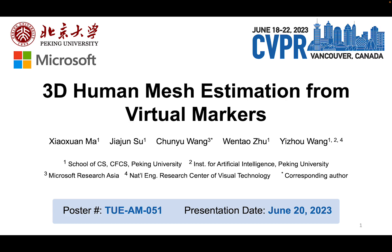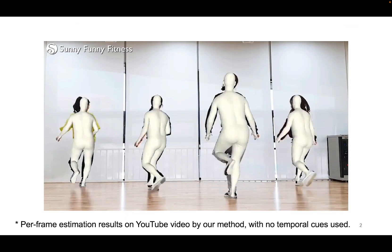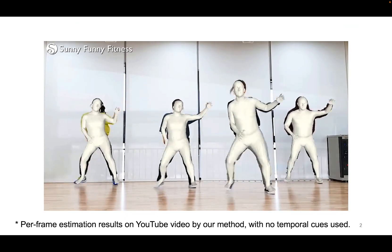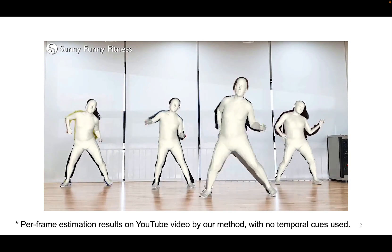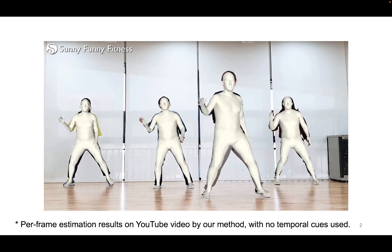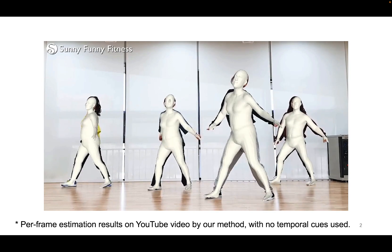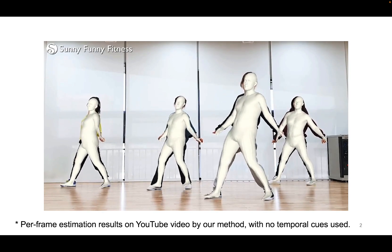Here shows the per frame estimation results on a YouTube video by our method. No temporal cues are used. Our method only focuses on single person mesh estimation, therefore we use an off-the-shelf human detector to detect person first and then estimate 3D mesh for each person using our method.